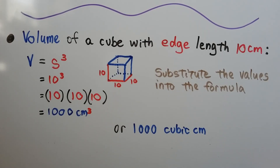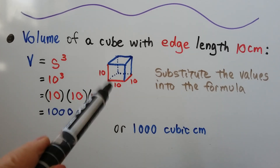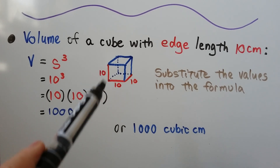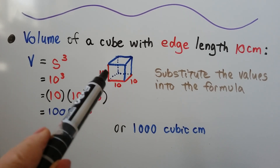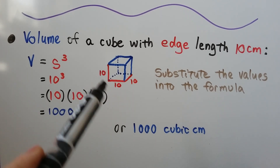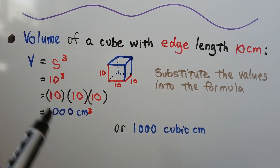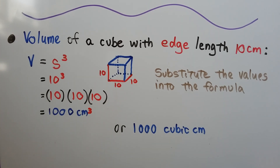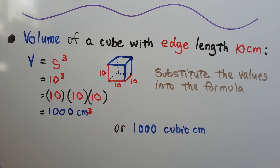For the volume of a cube with edge length 10 centimeters, we do S³: 10 × 10 × 10, which gives us 1,000 cubic centimeters for our volume.